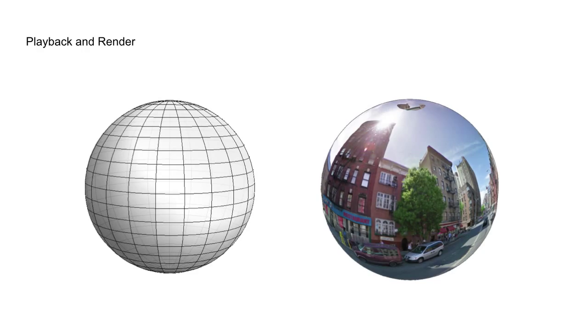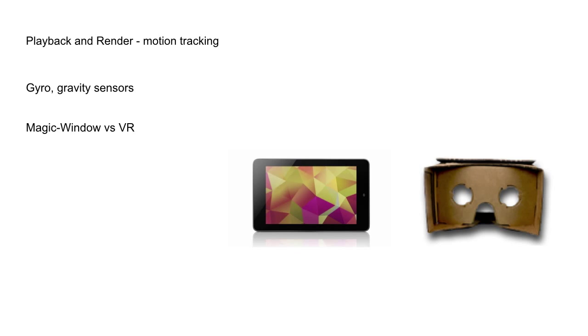Let's talk about rendering 360 videos. We need some sort of a 3D API — OpenGL or DirectX — and we map the texture of the video onto a sphere mesh, as per the projection. We have gravity and gyro sensors, so when you move your device, the view pans. We call this the magic window mode, because this device is like a magical window into another world — you can move this window around and it moves you into that other world. And of course there is VR mode.